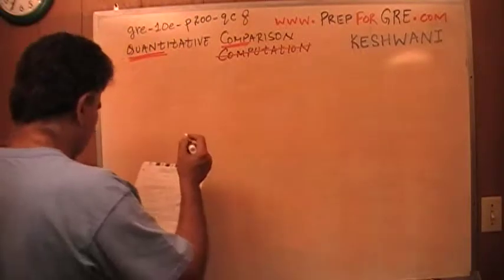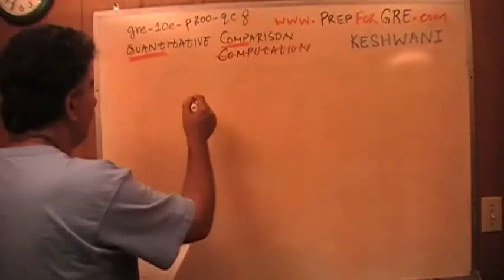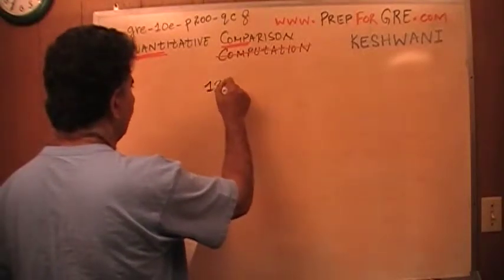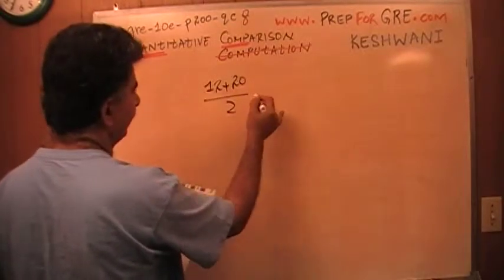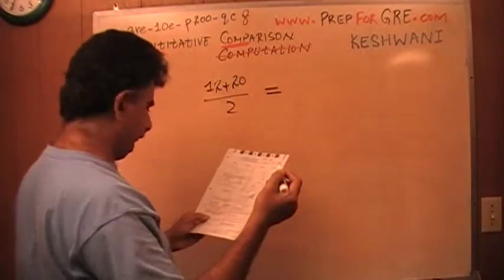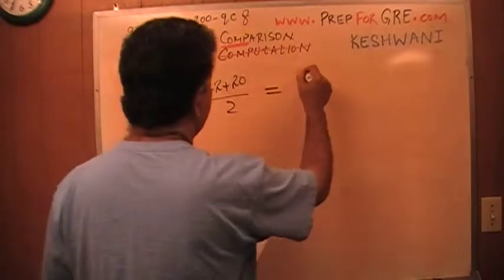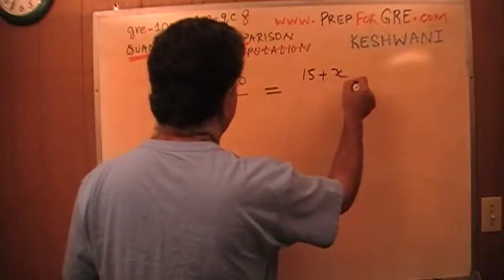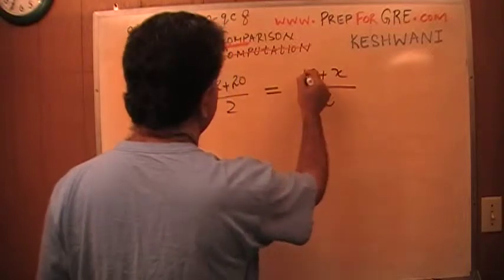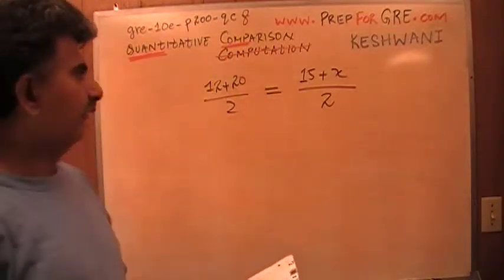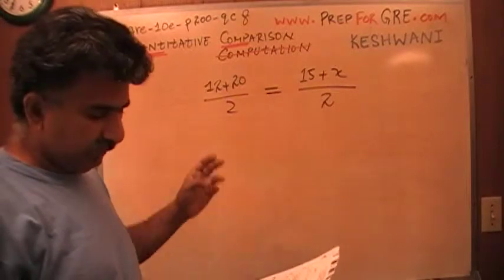Let's make a note of it. So how do you find the average of two numbers? Well, we add them up. 12 and 20. There are two of them. So you divide by 2. And that average, we are told, is same as the average of 15 and X. Again, you divide that by 2. If you take the average of those two numbers, 15 and X, this average is same as that average.